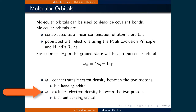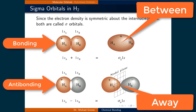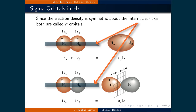ψ− excludes electron density between the two protons due to destructive interference of the two waves representing electrons in the 1s orbital. Because the electron density is excluded between the two protons, it is referred to as an antibonding orbital. Illustrations demonstrate the concentration of electron density between and away from the center of the two nuclei, depending on whether the orbital is bonding or antibonding. Since the electron density is symmetric about the internuclear axis, both are called sigma orbitals.